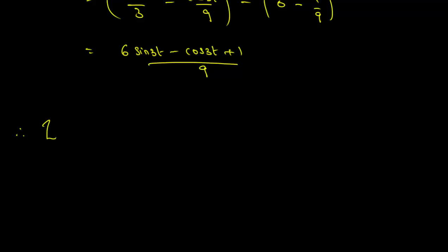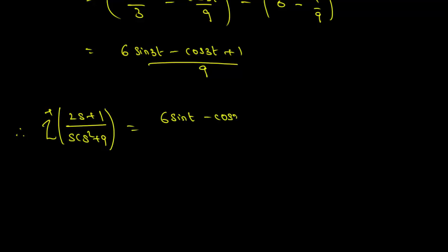Therefore, the inverse Laplace transform of (2s + 1) / (s · (s² + 9)) is (6·sin(3t) − cos(3t) + 1) / 9.